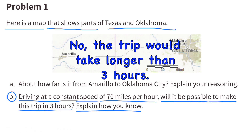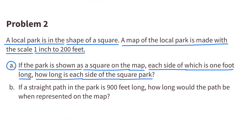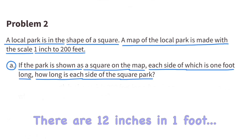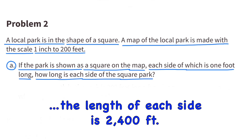Number two: a local park is in the shape of a square. A map of the local park is made with the scale one inch to 200 feet. If the park is shown as a square on the map, each side of which is one foot long, how long is each side of the square park? We know that there are 12 inches in one foot, and 12 multiplied by 200 equals 2,400. So the length of each side of the park is 2,400 feet.